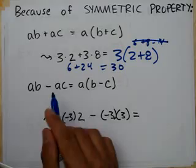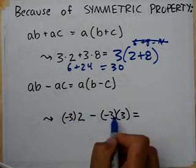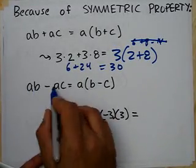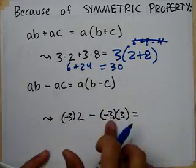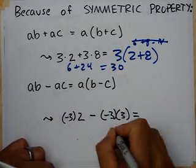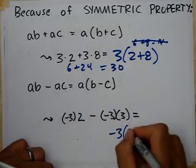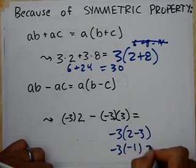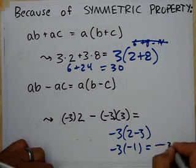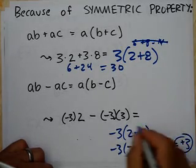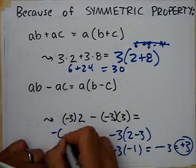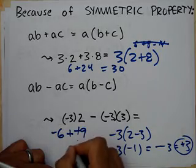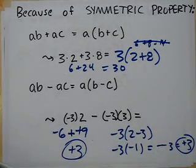Here's another one: these terms both have negative 3 as a common factor. Just like an A is a common factor, you can take out that negative 3 and rewrite it as negative 3 times (2 minus 3). Let's check: 2 minus 3 is negative 1, and negative 3 times negative 1 is positive 3. The other way: negative 3 times 2 is negative 6, minus negative 9 — that's negative 6 plus 9, which is positive 3. It works!